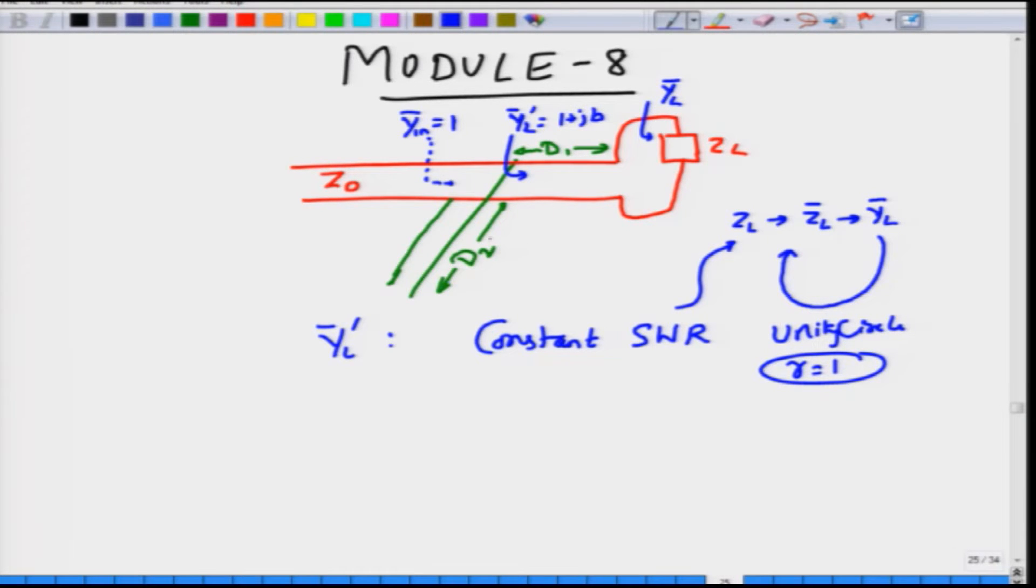And what this stub actually did was to cancel off this B, that is the reactive part, by starting with either an open circuit or a short circuit in such a way that this YS prime, which was the stub admittance was exactly equal to minus JB. If for example, YL prime was 1 plus J2, then the stub is supposed to give you minus J2. If the YL bar admittance is 1 minus J2, then the stub is going to give you plus J2.